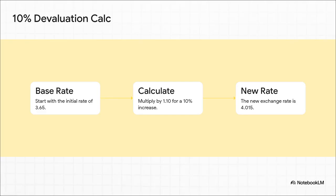Now, let's imagine the shekel devalues, or weakens, by 10%. The math here is pretty straightforward. You just take our base rate of 3.65 and tack on that 10%. The new rate is about 4.02. Now, here's the key thing to notice, and it's a little counterintuitive: for the currency to get weaker, the number actually goes up.